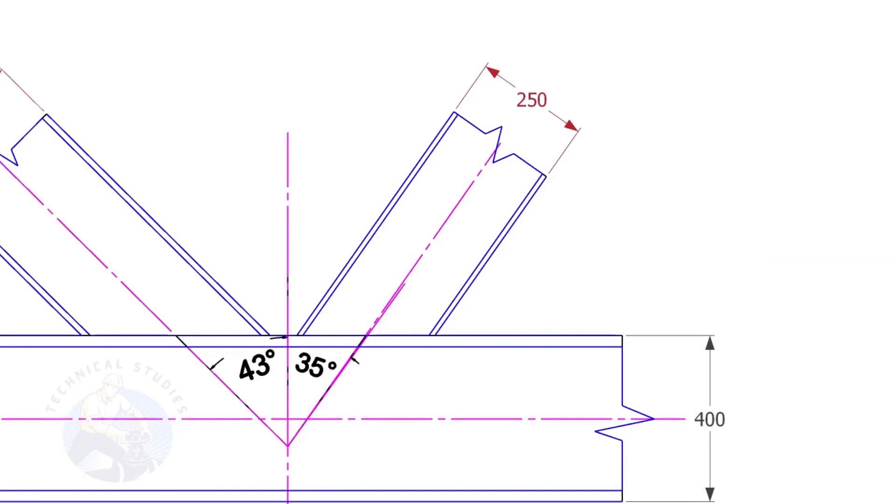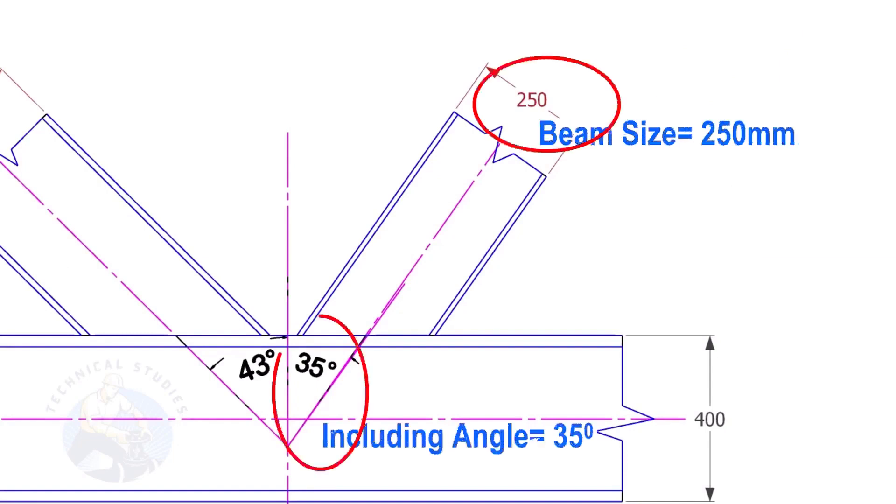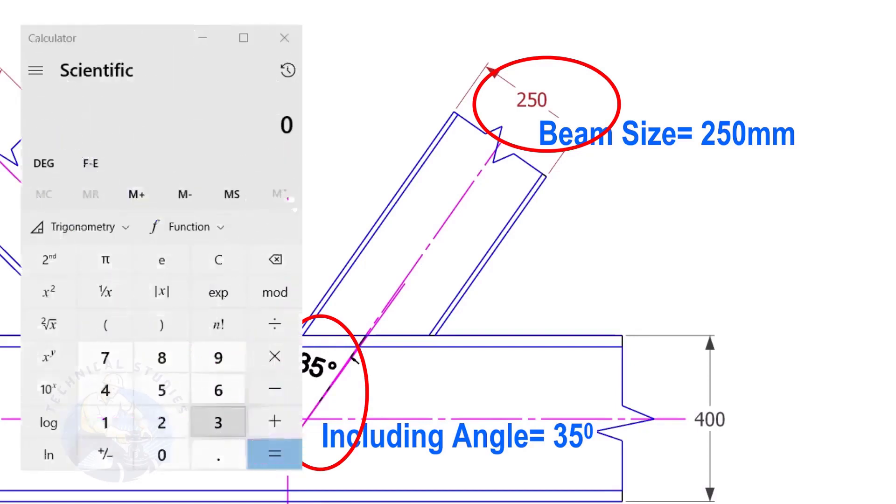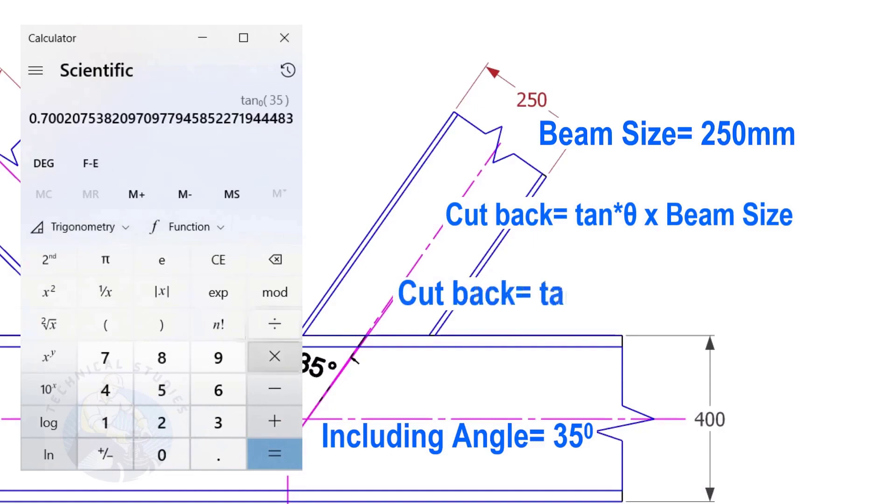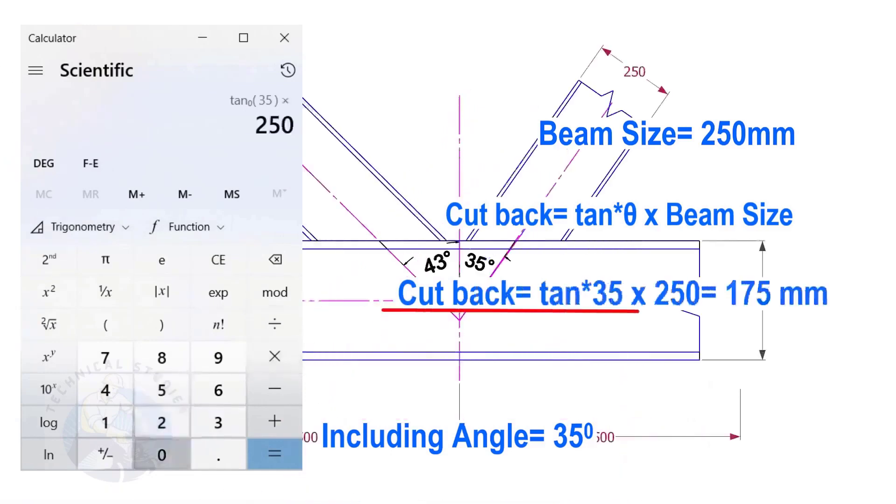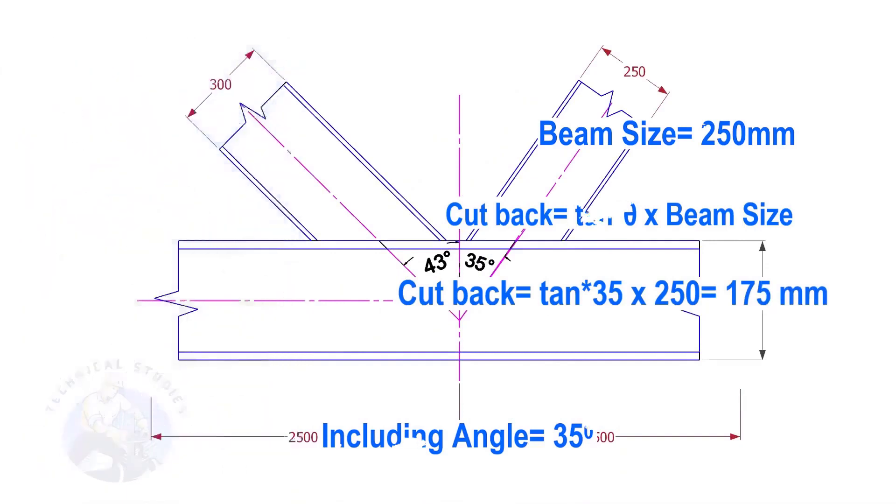Here, the size of the beam is 250 and the including angle is 35. Let us calculate the cutback. The cutback for this beam is 175 millimeters.